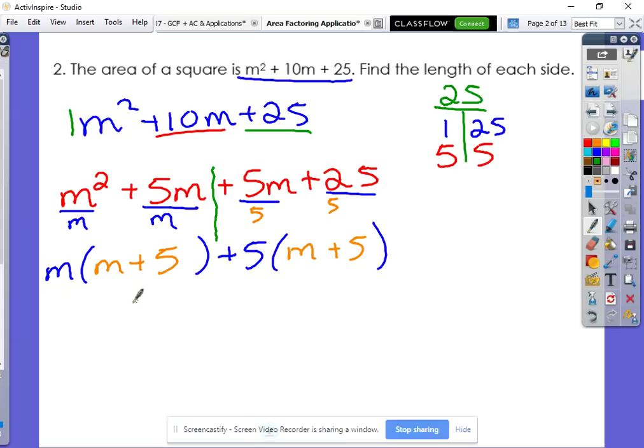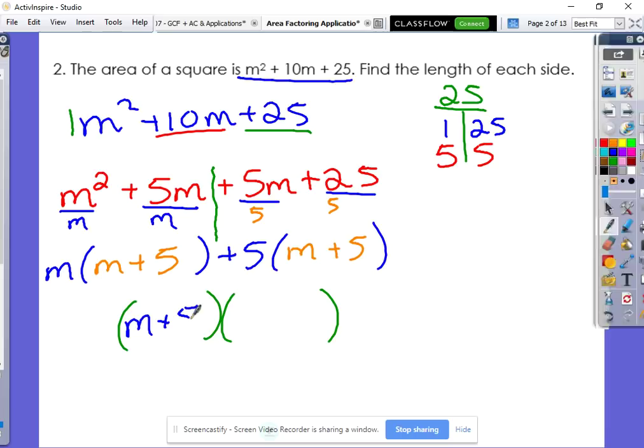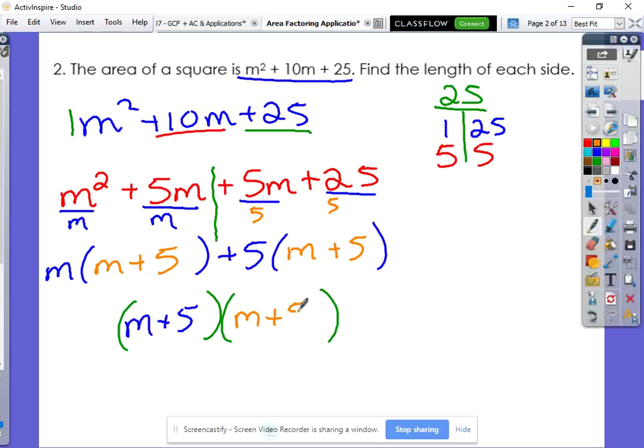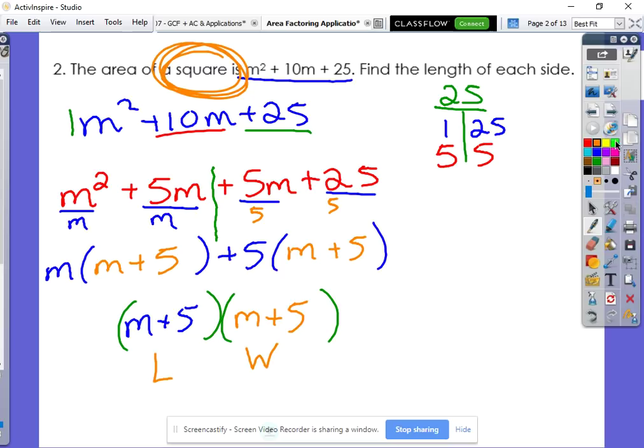So you can see those orange m plus 5s are the same. Let's create our final answer. Our final answer has to do with those two binomials, and we take our GCFs, m and positive 5. Those come together, and then our second binomial is that repeat binomial m plus 5. So there we go. This is the side length. You could call this the length and this the width, but notice that they're the same. And the reason why they're the same is because this is a square. So squares always have the same side lengths.